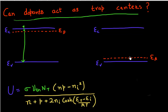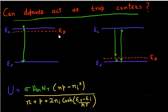Or, in the case of acceptors, if I have these states created near my valence band, can they help in a process of generation or recombination of carriers? I'll have a positive attitude about this topic and say: why not? I'll assume that yes, these donors and acceptors can, in fact, act as good trap centers.